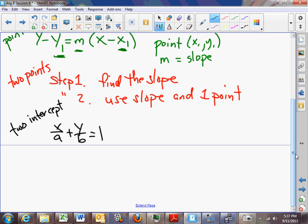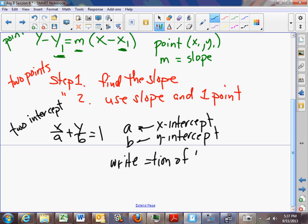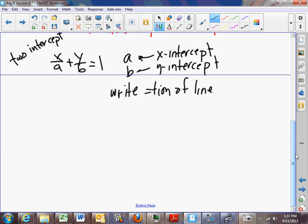Now, in this particular case, a will be the x-intercept and b will be the y-intercept. And this can be very handy if they say, write the equation of a line with x-intercept 3 and y-intercept 4.